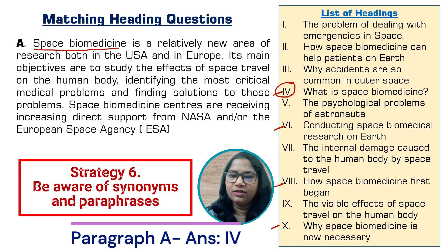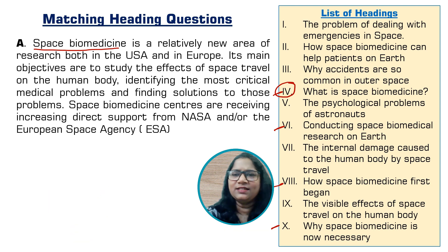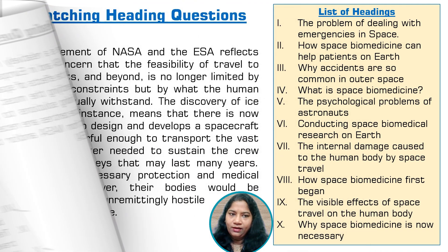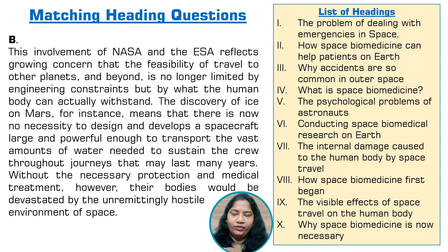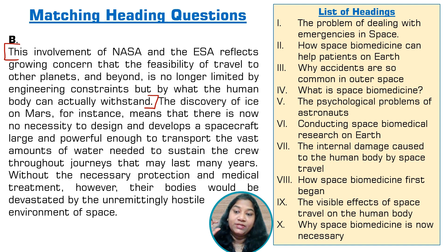All six steps will be applied over and over again for each paragraph, but for certain paragraphs you may be able to skip some steps if the answer is clear. Let's move to paragraph B. Pay attention to the first sentence: 'This involvement of NASA and the ESA reflects growing concern that the feasibility of travel to other planets and beyond is no longer limited by engineering constraints, but by what a human body can actually withstand.' It's a lengthy, complex sentence.